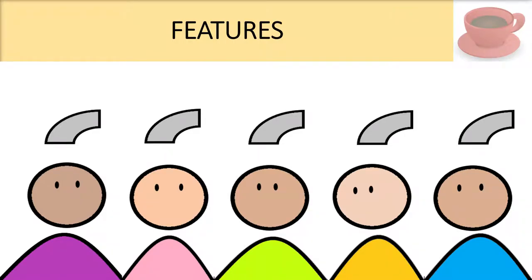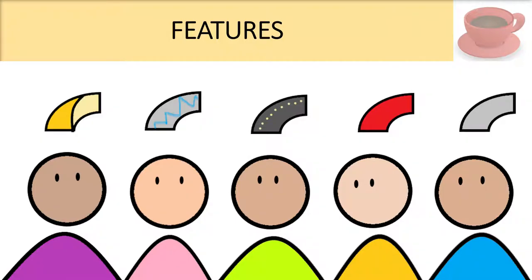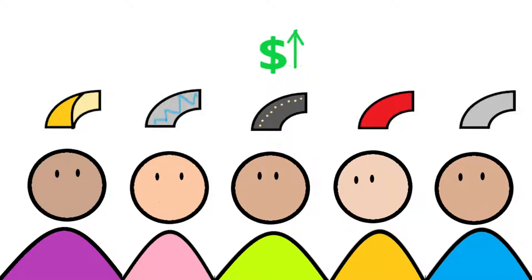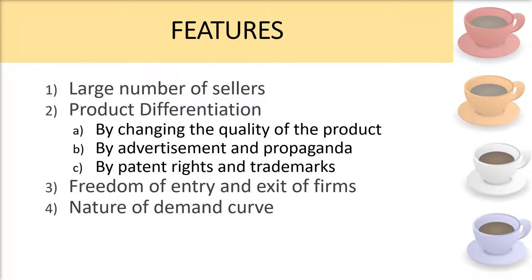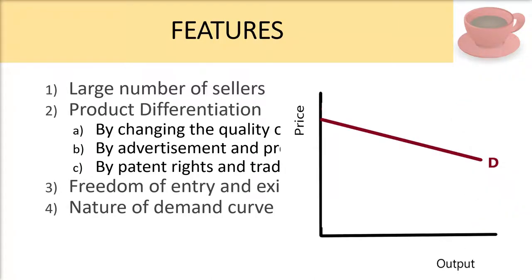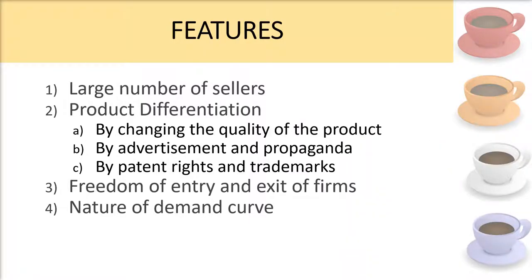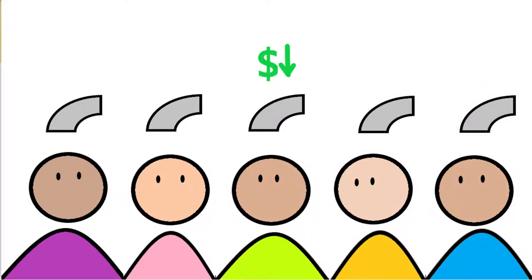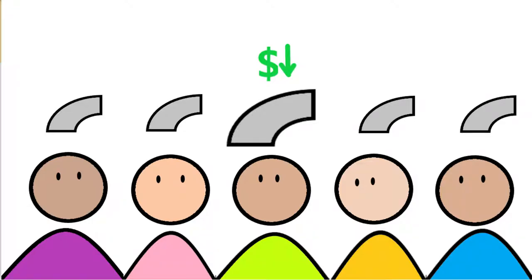The fourth feature is the nature of the demand curve. Under monopolistic competition, no single firm controls more than a small portion of the total output. Even with product differentiation, the products are close substitutes, so a reduction in price will increase the sales of the firm but have only a little effect on the pricing and output decisions of other firms. The demand curve slopes downward to the right — it is elastic but not perfectly elastic. In perfect competition, the demand curve was horizontal, meaning perfectly elastic, and even a small price change would increase quantity demanded by a large amount.